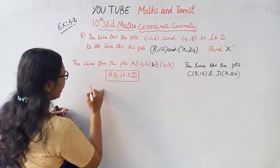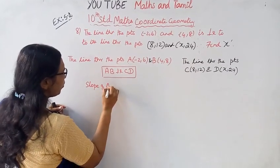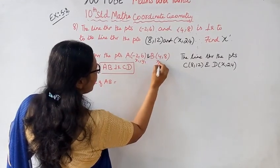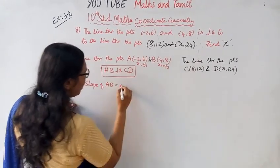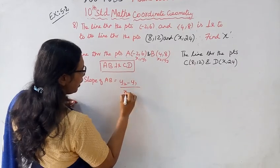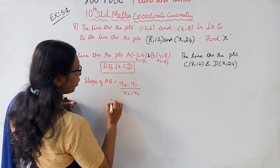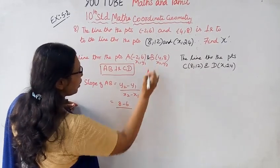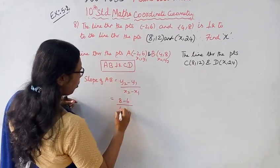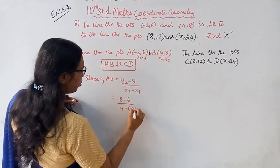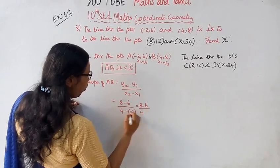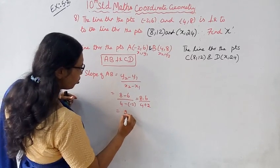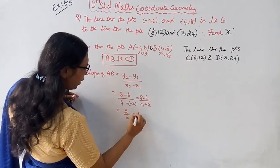Now we have 2 points. What can we find? Slope of AB. Here A is (x1, y1) and B is (x2, y2). The formula is y2 minus y1 divided by x2 minus x1. That gives us 8 minus 6 divided by 4 minus (-2), which is 2 divided by 6, equal to 1/3.